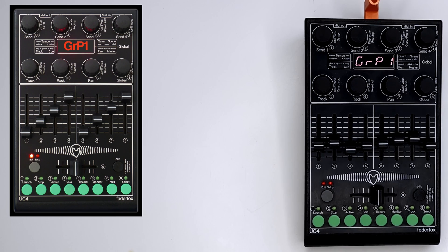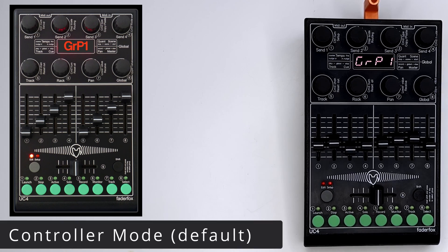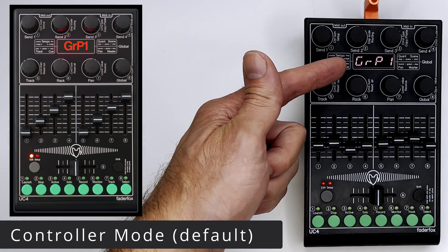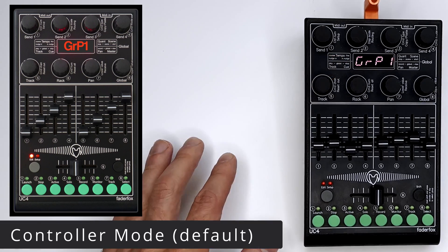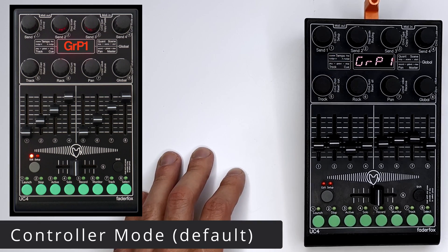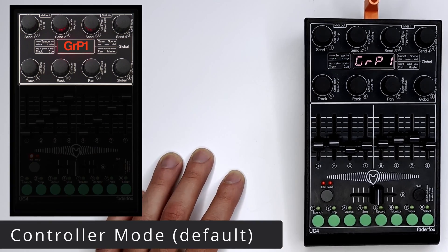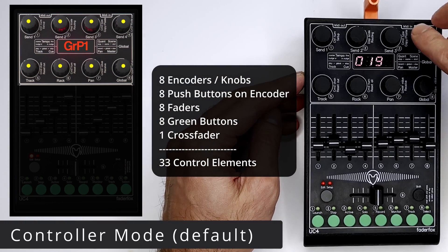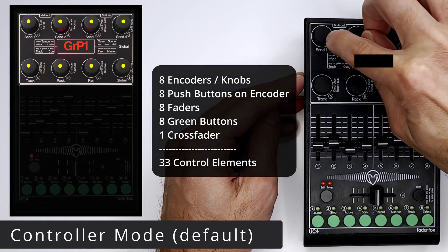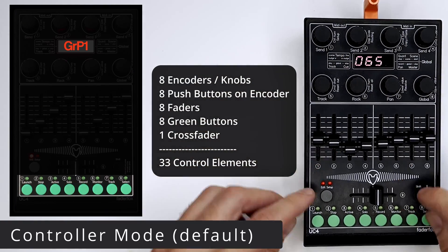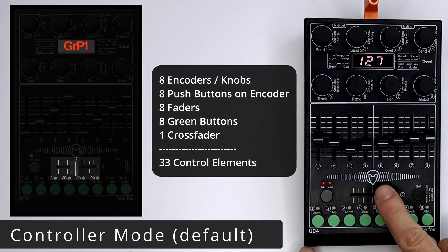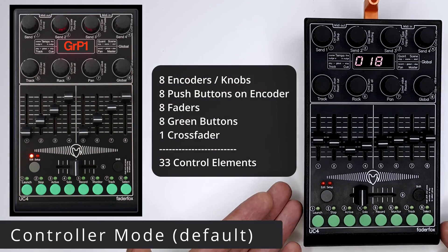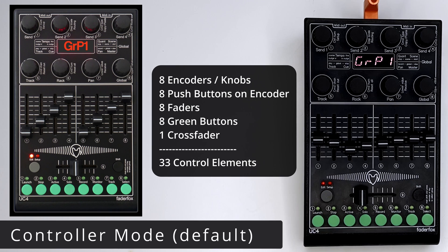Your Fader Fox UC4 kicks off in controller mode right when you plug it in, with group one as the default. In each group, there are 33 customizable controls: 8 encoders or knobs, each with its own push encoder, 8 faders, 8 buttons, and 1 crossfader for a total of 33, offering a rich array of command possibilities within your DAW.